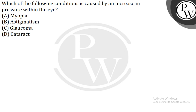A condition caused by an increase in pressure within the eye — the correct answer here is glaucoma. Glaucoma is a group of eye conditions that damages the optic nerve. What happens is that the drainage system gets blocked or is not functioning well, and as a result, the pressure inside the eye builds up, which in turn damages the optic nerve.